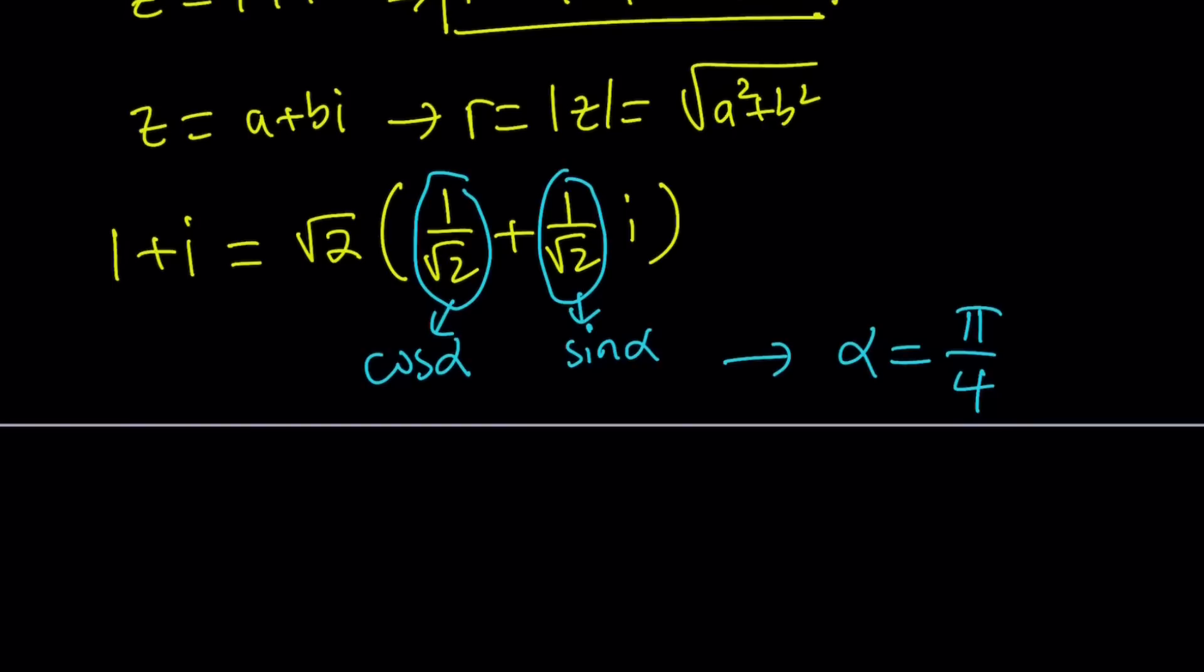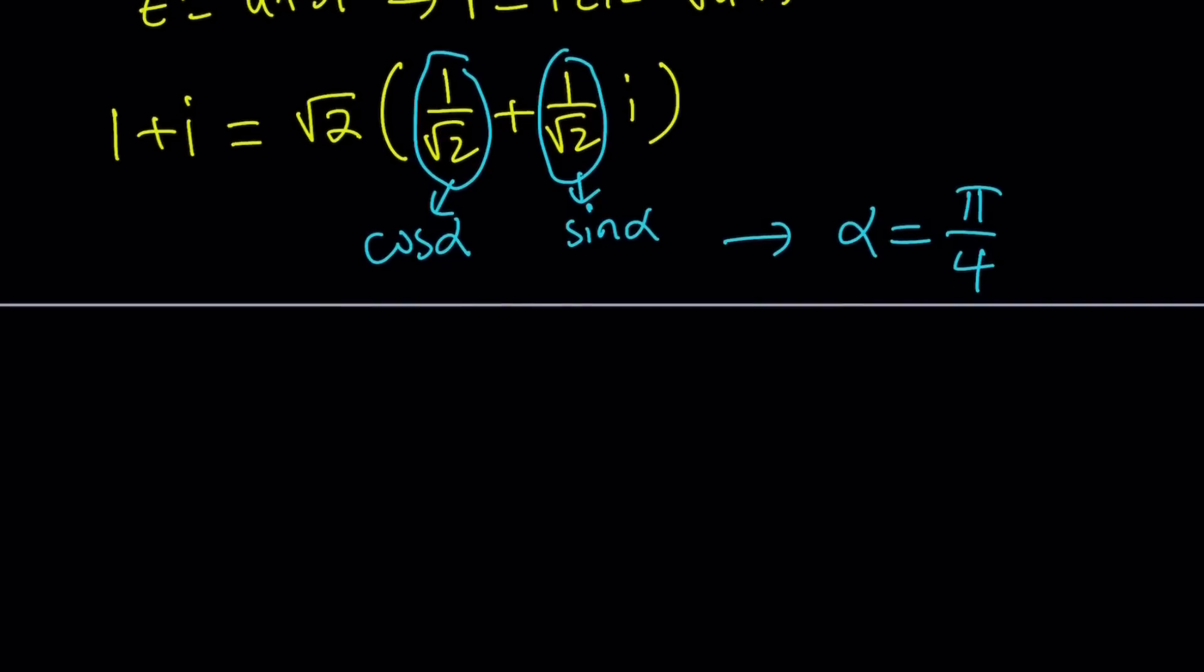We could also do the following to figure out that it's pi over 4. On the coordinate system we can mark this number. 1 plus i is represented by the point 1 comma 1, which is 1 unit away from here and 1 unit away from here. That makes an angle of exactly pi over 4 radians or 45 degrees with the positive x-axis. Instead of calling it the x-axis, we call it the real axis and the y-axis becomes the imaginary axis. Our complex number has a real part and an imaginary part.